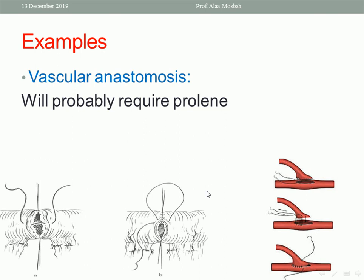For example, for bowel anastomosis, Vicryl suture is suitable. For vascular anastomosis, Prolene suture is suitable.